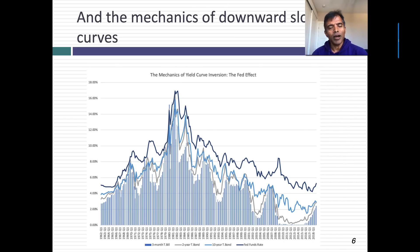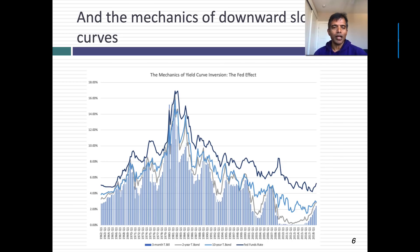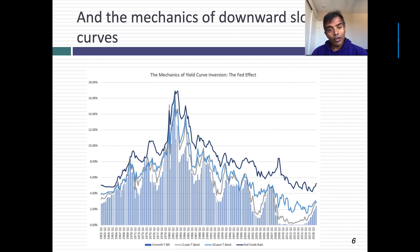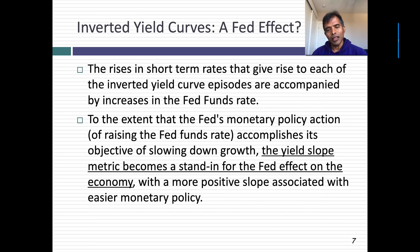In the U.S., short-term rates generally get pushed up significantly when the Fed hits the brakes on monetary policy — because it sees signs of higher inflation or an overheated economy. To show how much inversions have been driven by Fed action, I've graphed the yield curve alongside the Fed funds rate, which is the primary mechanism showing how restrictive or easy monetary policy is. Almost every episode where yield curve inversions occur is accompanied by Fed funds rates going up.